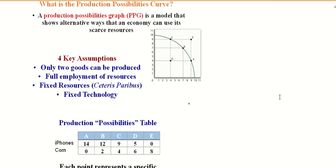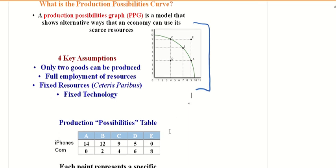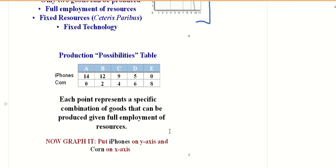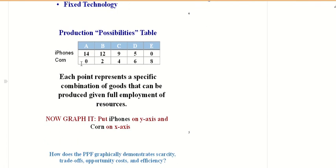So when we create a production possibilities curve, and this is the one I used right here for your homework, we assume only two goods can be produced, and we can plot those things out. So if we were to plot, for example, let's imagine society can produce iPhones and corn.